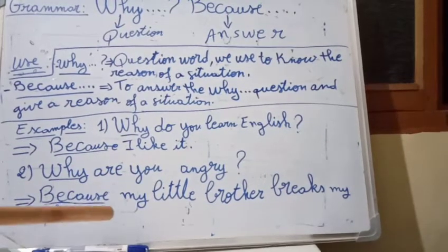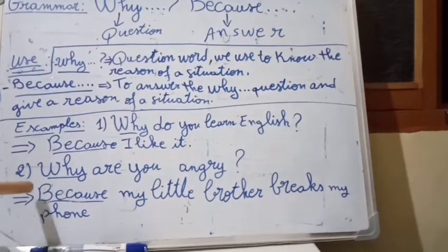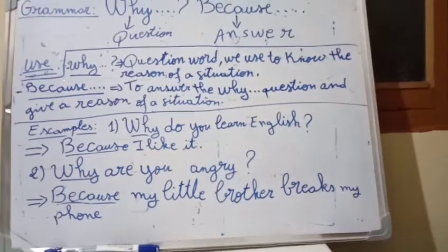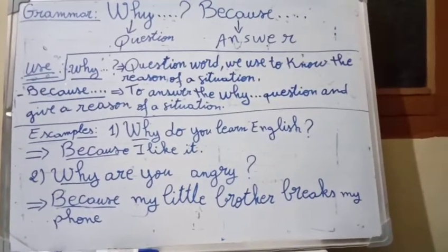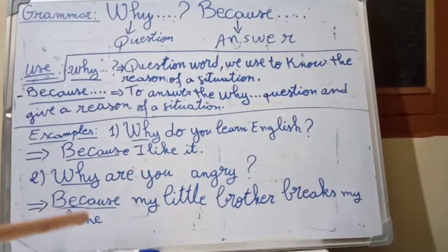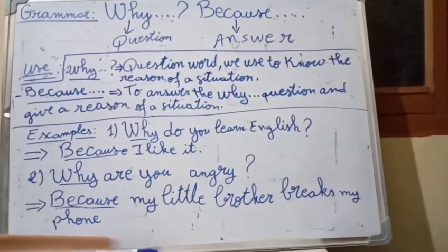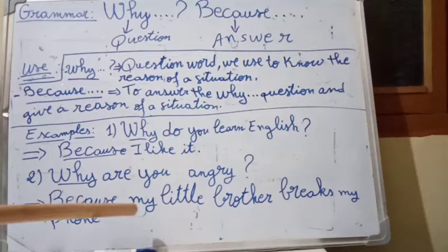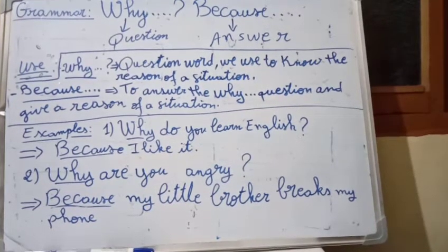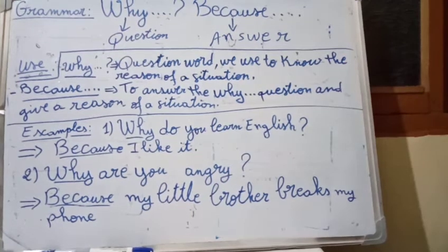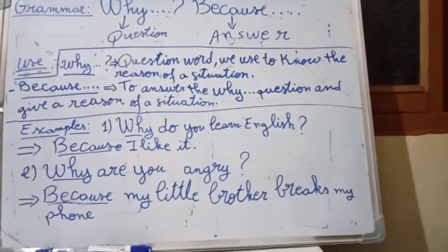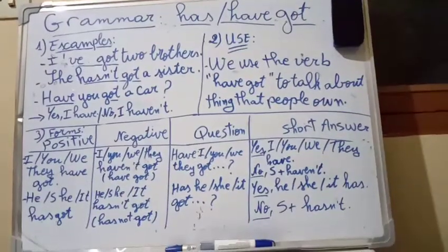Or maybe they say 'Because English is easy for me.' It depends on the question. Then example number two: 'Why are you angry?' Here you are asking about the feelings of someone, you want to know why this person is not happy. The answer could be: 'Because my little brother broke my phone.' The person is giving you a reason behind their feeling, explaining why they are angry and sad. So here we finish the first lesson.